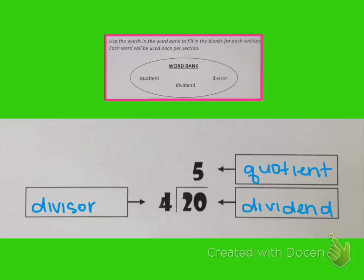You should have 4 as the divisor, 5 as the quotient, and 20 as the dividend.